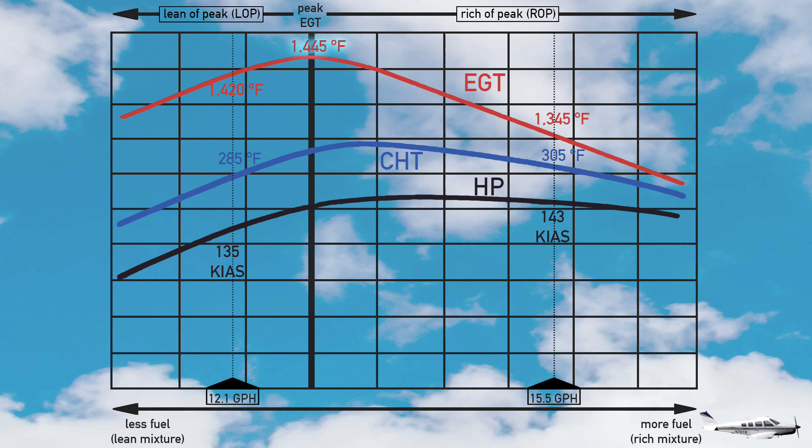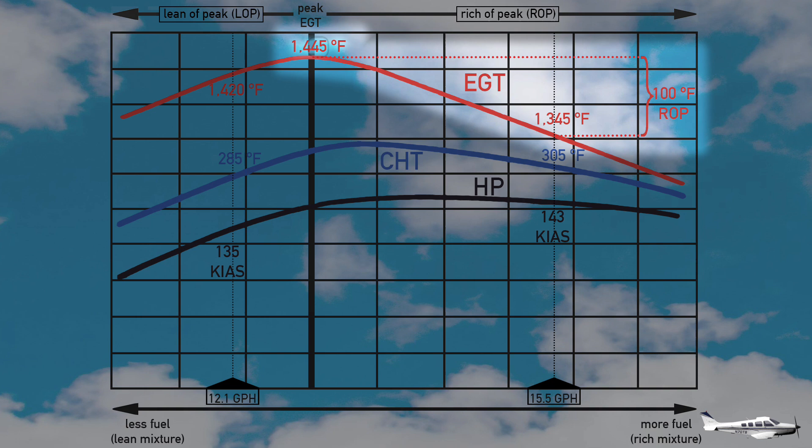One more addition to this chart. When pilots talk about power settings for the engines, they often express that in how many degrees rich-of-peak, or how many degrees lean-of-peak they are, rather than fuel flow. For example, in the rich-of-peak case shown on the right side of this chart, at 15.5 gallons per hour fuel flow, our EGT was 1345 degrees, which is 100 degrees less than the peak EGT of 1445 degrees. Therefore, we call this power setting 100 degrees rich-of-peak. The equivalent for the lean-of-peak case was a temperature of 1420, or 25 degrees below the peak of 1445. So in this case, we were running 25 degrees lean-of-peak.